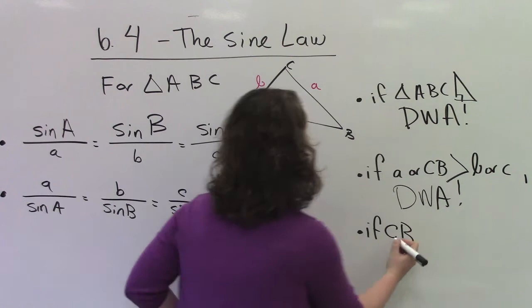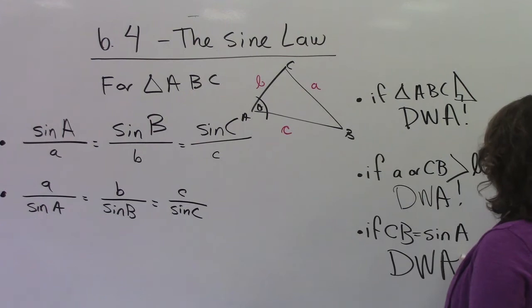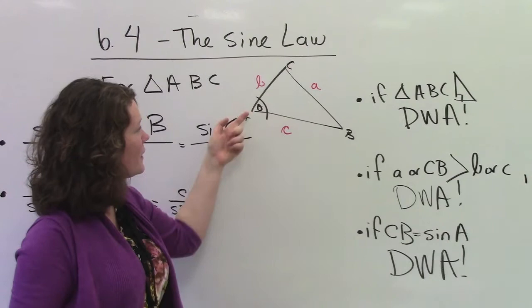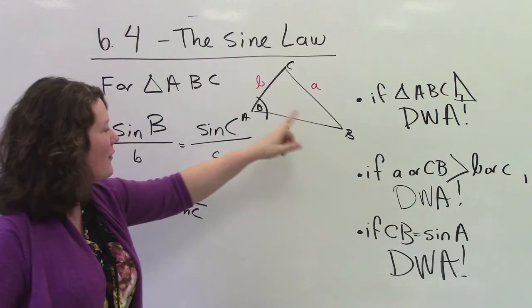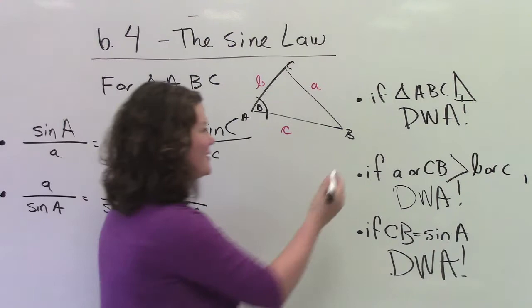Lastly, if CB or little a is equal to Sine A, don't worry about it! You don't have to worry about the ambiguous case! If you know that the opposite is bigger than one of the sides that's been given, don't worry about it! If ABC is a right angle triangle, don't worry about it! And if CB equals Sine A, don't worry about it! In fact, these two things are connected, right?